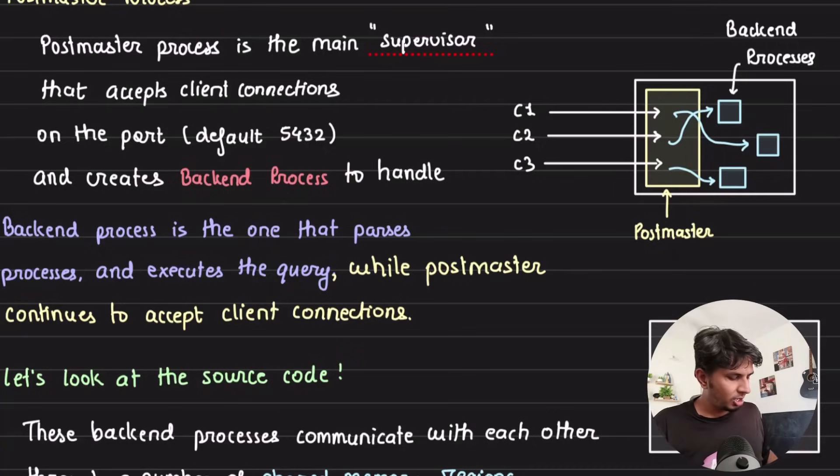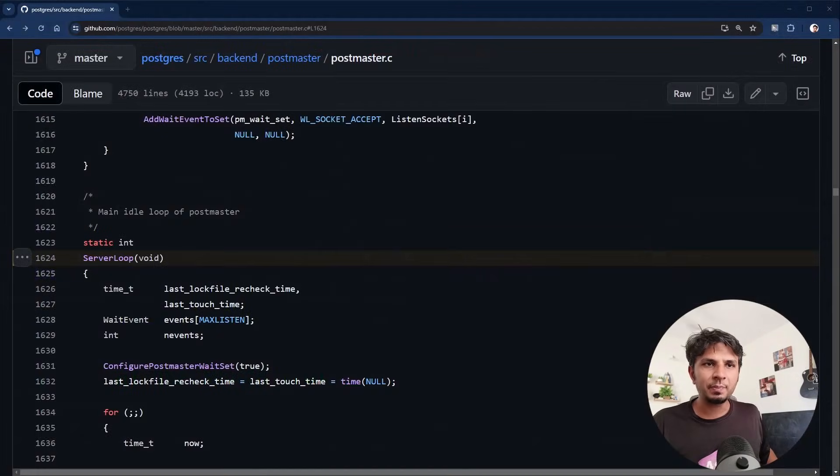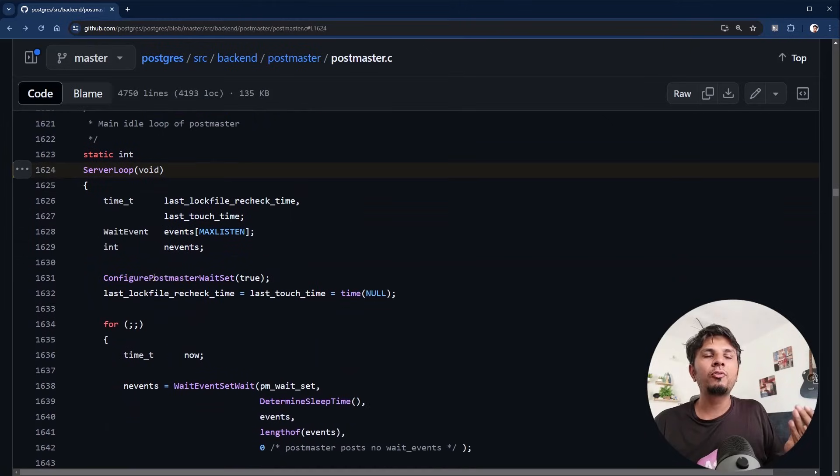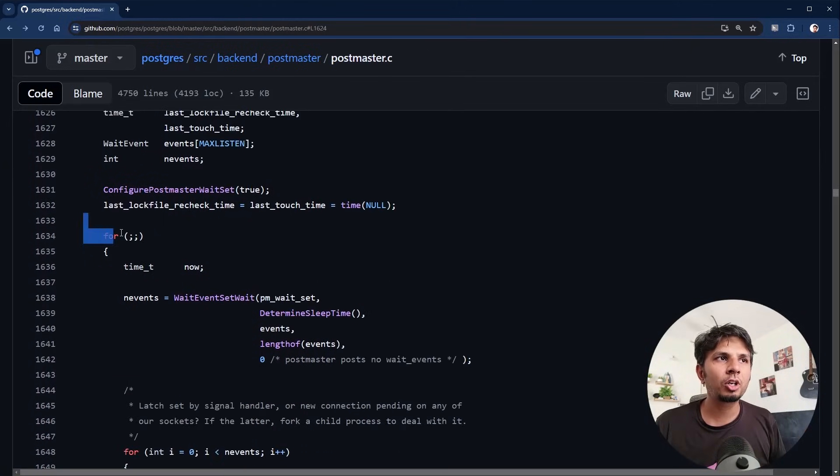So here, to understand it slightly better, I am opening up the source code of Postgres. I am opening the file called postmaster.c. I am on line 1624. There is a function called server loop. This function is the main infinite for loop that is running, which is waiting to accept the client connections. So here we see an infinite for loop and we see the function wait_event_set_wait. This is where it is waiting for or evaluating the number of pipes which are ready for an incoming connection.